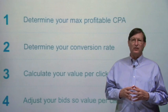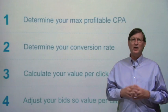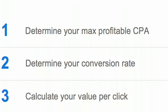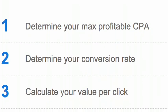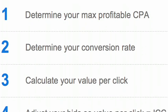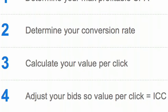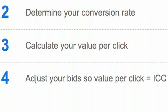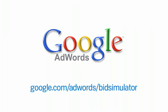So to recap our discussion, the steps you should take to maximize the profit from your marketing investment are: 1. Determine your maximum profitable CPA. 2. Determine your conversion rate. 3. Calculate your value per click. 4. Adjust your bid so that value per click equals incremental cost per click. I hope that this discussion has helped you to understand more about cost per click bidding. To learn more about Bid Simulator and how it can help you to optimize your keywords, visit the link at the bottom of the screen. Thanks for listening.